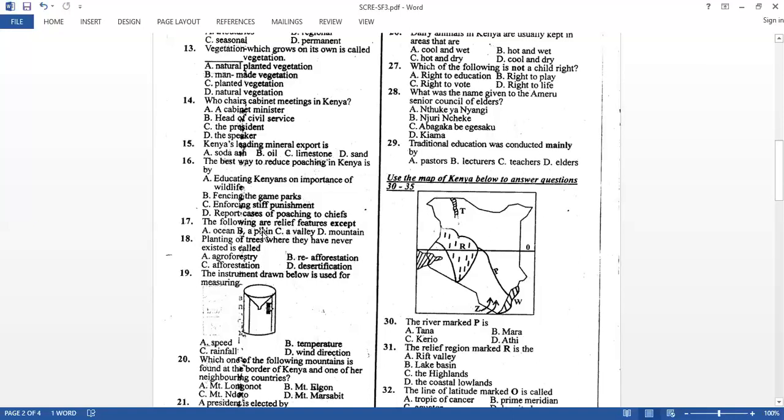The following are relief features except we have ocean, which is a drainage feature, plain valley, mountains, and also hills and plateaus, they'll form what's called relief features. So drainage features, ocean, rivers, and even lakes. So our answer here for number 17 is ocean, which is a drainage feature and not a relief feature. Planting of trees where they have never existed is called, planting of trees is what's called afforestation. Cutting down of trees, deforestation, then reafforestation is like you are repeating now. Planting trees where maybe they have been cut down, then you replant, so reafforestation.